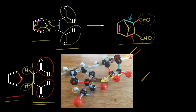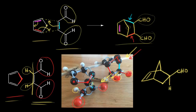Let's draw this in. We'd have a bicyclic compound with our bridging CH2, our double bond, and our aldehydes. Our aldehydes are up, so at this carbon we draw an aldehyde up — CHO — with a hydrogen going down. At this carbon, an aldehyde going up — CHO — and a hydrogen going down. This is the exo product. Our aldehydes are up, our bridging CH2 is up, and here is our double bond.